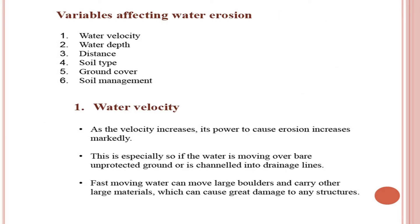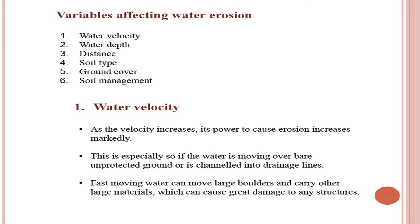Six important variables determine the quantity of soil eroded by water: water velocity, water depth, distance, soil type, ground cover, and soil management. As water velocity increases, its power to cause erosion increases, especially over bare unprotected ground or in drainage lines. Fast-moving water can move large boulders and cause great damage to structures. As water depth increases, so does its ability to move soil particles and larger objects such as stones and boulders.